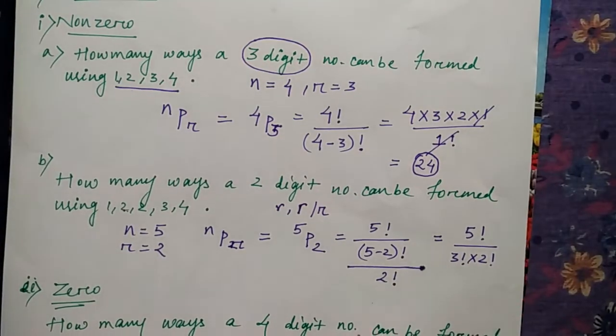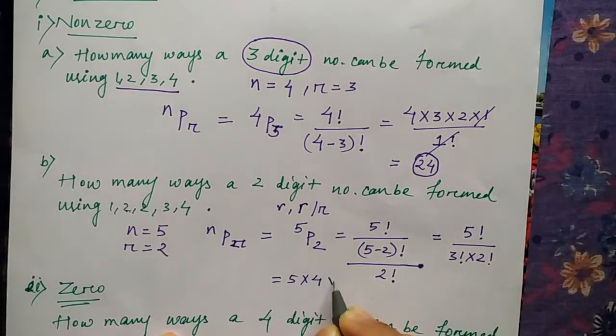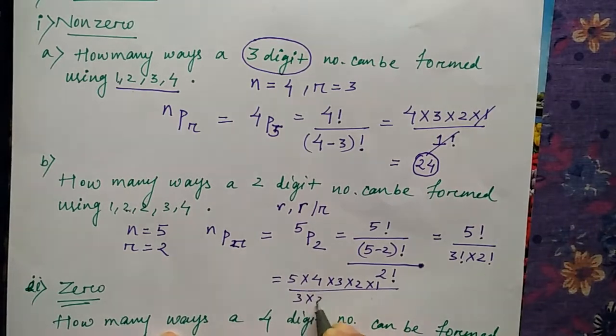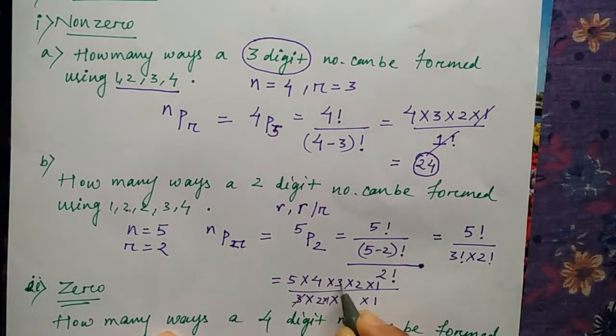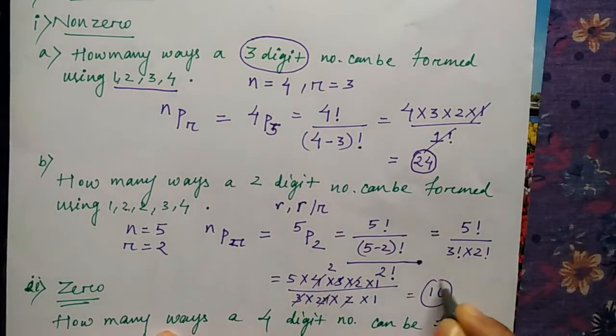So how much will be the answer? The answer will be 5×4×3×2×1 divided by 3×2×2×1. Here also 1 is there. So 3, 2, 2 cancel out. So the answer is 10.